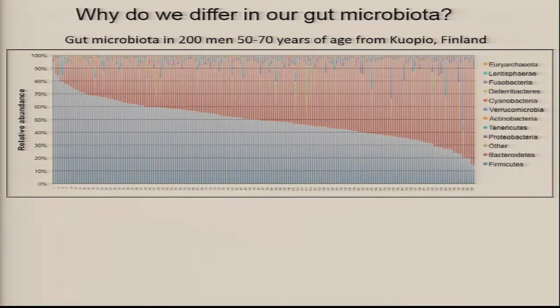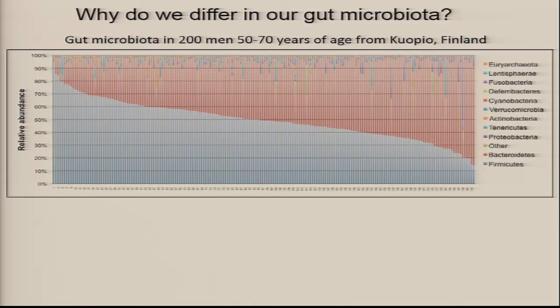There is a lot of variation in gut microbiota in any population. We've heard about flies, C. elegans, and zebrafish. This is a population of humans — a subgroup from a little town in Finland called Korpio. It's all men between the ages of 50 and 70 years. It's a rather homogeneous population, but you can see the tremendous amount of variation. At the phyla level, firmicutes range from about 95% to about 15%.